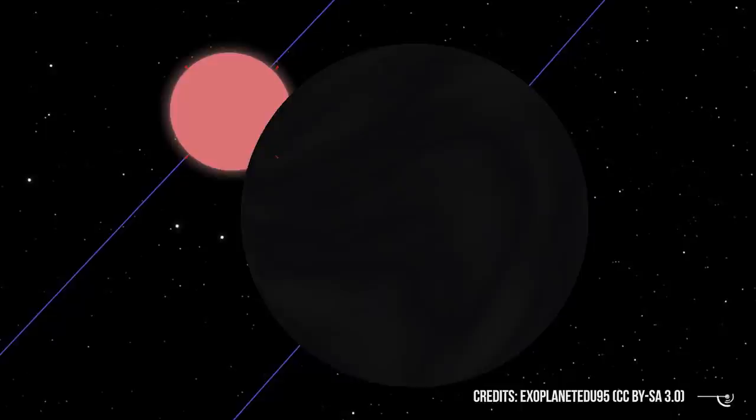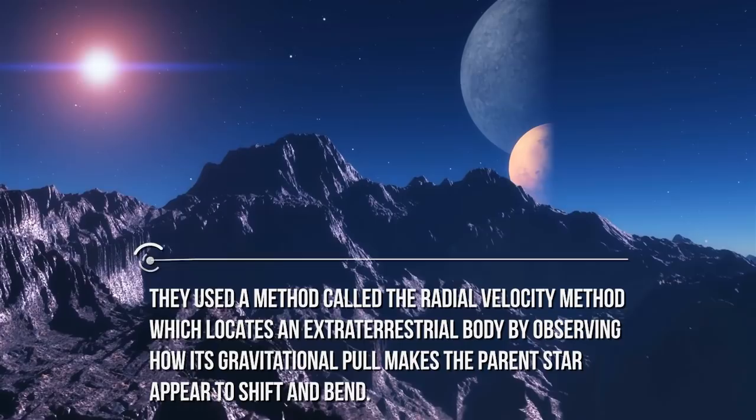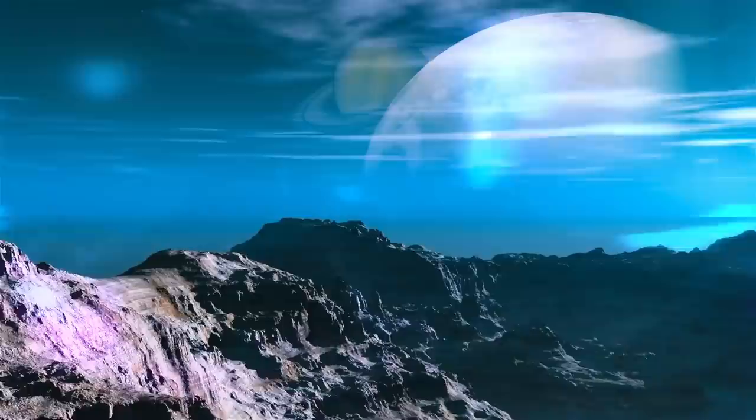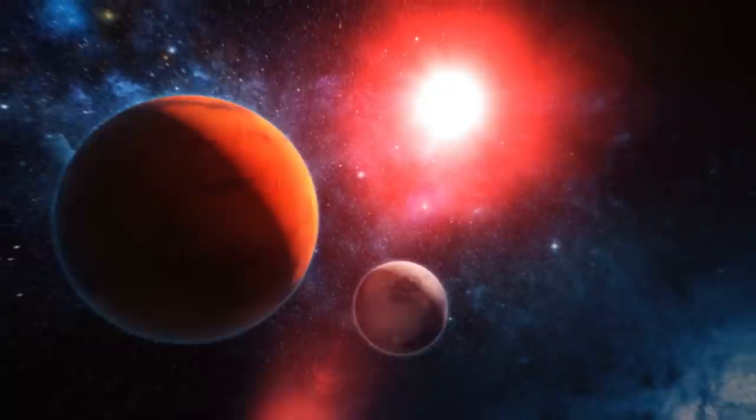They used a method called the radial velocity method, which locates an extraterrestrial body by observing how its gravitational pull makes the parent star appear to shift and bend. Even though the planet is huge, it is too compact and is considered a warm Neptune, as it's similar in size but closer to its star than Neptune is to the Sun. This planet resides very close to Gliese 436, just about 4 million km away.